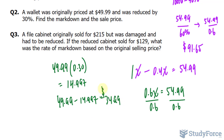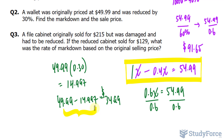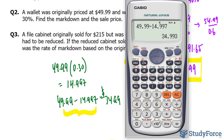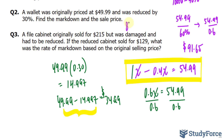We could have also solved this using the algebraic approach, and it would have given us the same answer. In question number three, a file cabinet originally sold for $215 but was damaged and had to be reduced. If the reduced cabinet sold for $129, what was the rate of the markdown based on the original selling price? We're told there was a big discount from $215 to $129. If we find the difference between these numbers, that's $86 — therefore it was reduced by $86.